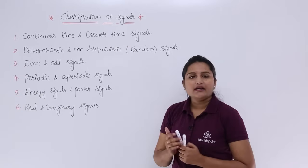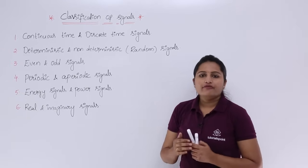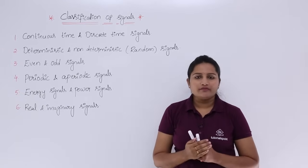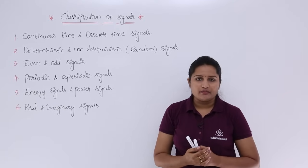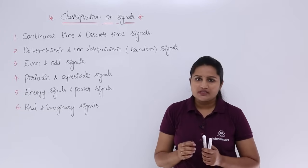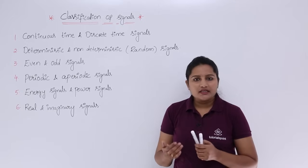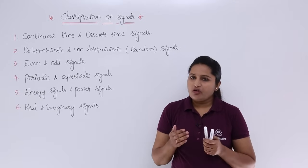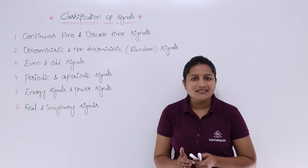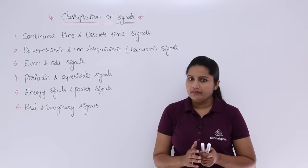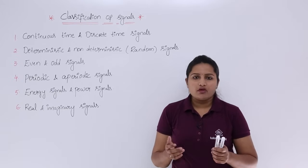For a continuous time signal, we can define the value or amplitude of that signal at any instant of time. In discrete time systems, we cannot determine the value of the signal at all instants — only at discrete intervals of time can we determine that signal; at the remaining intervals we cannot.